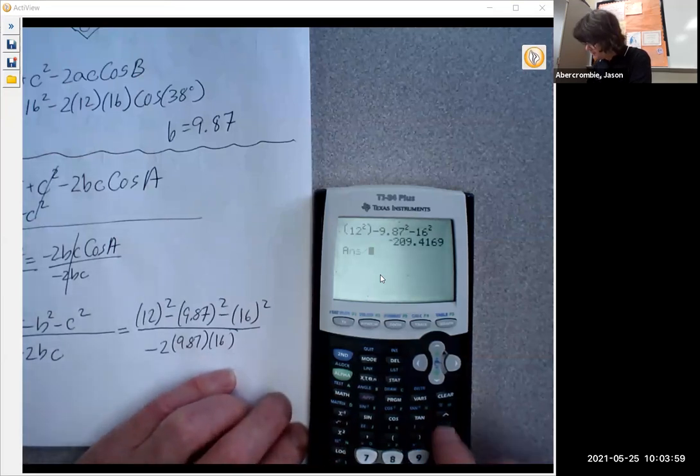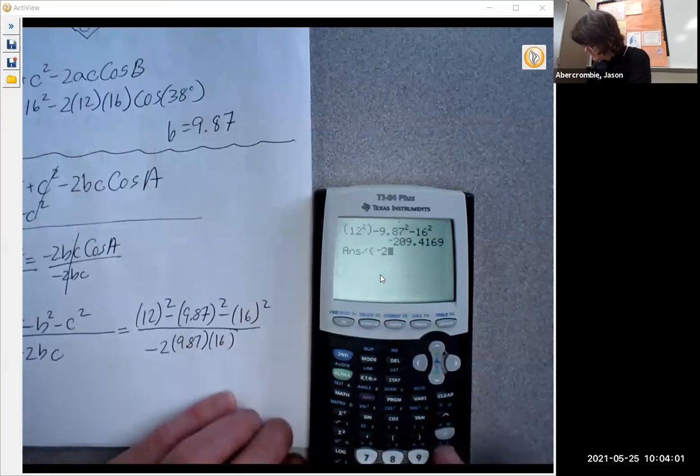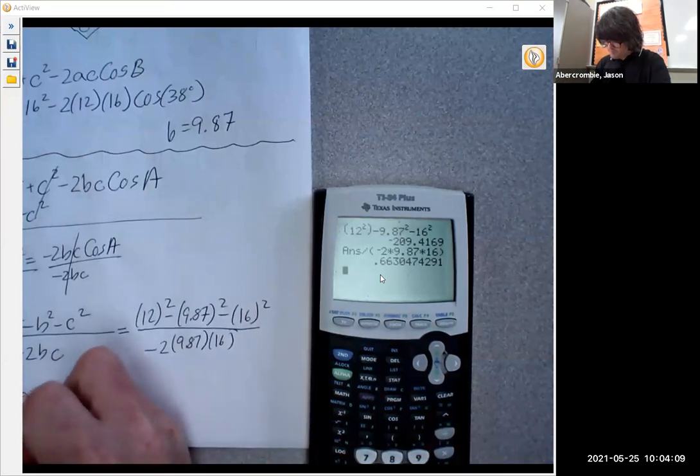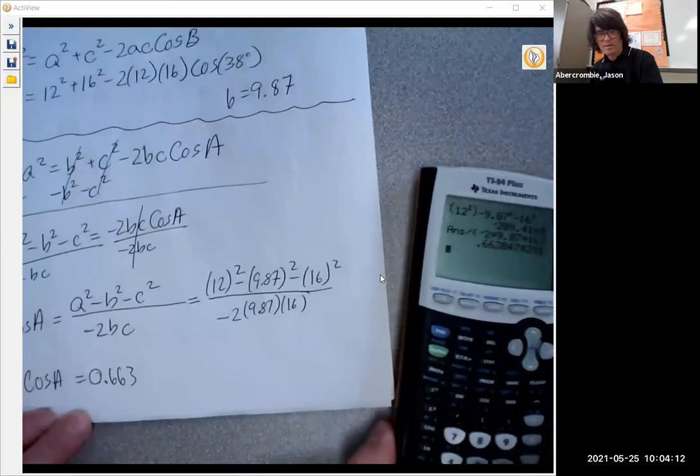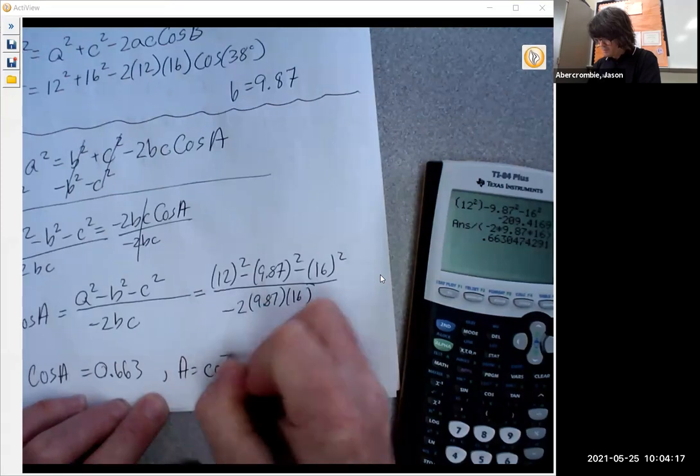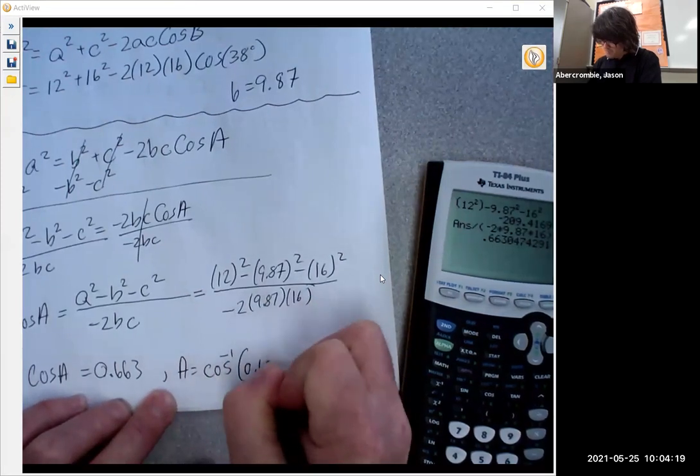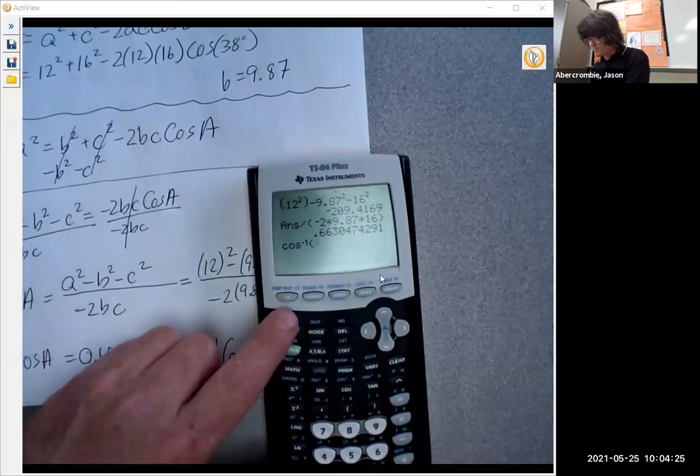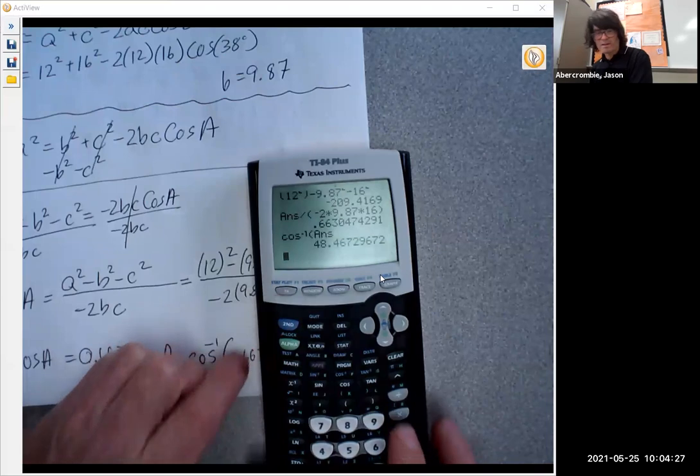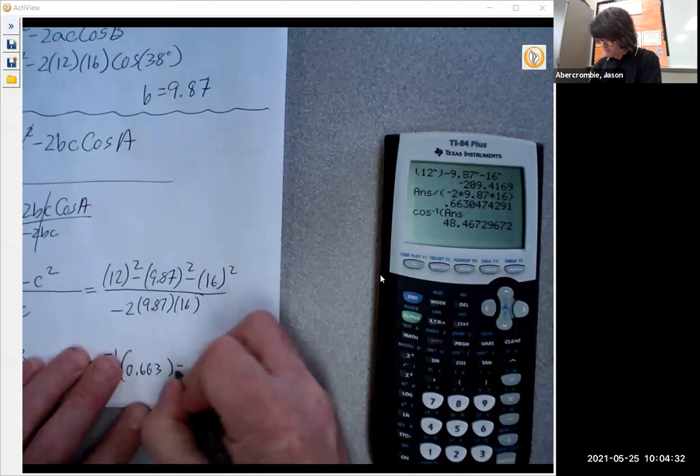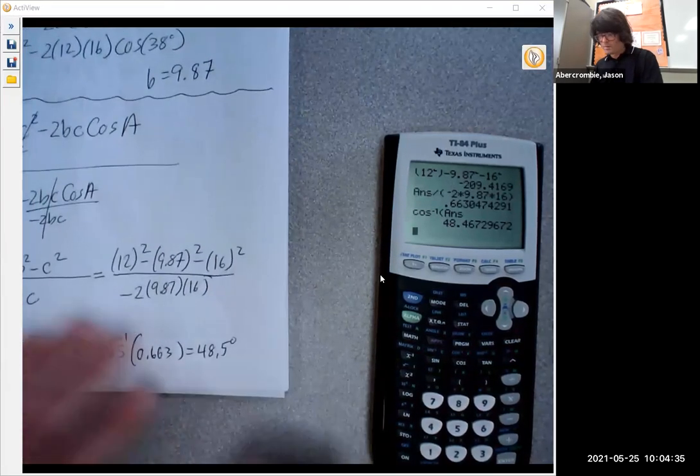So 0.663 cosine equals 0.663, and A is inverse cosine of that number. So we're going to do second cosine for inverse cosine and answer. So it's 48 point, call it 48.5 degrees.